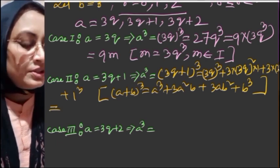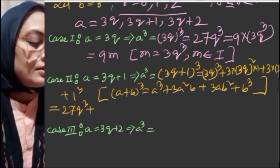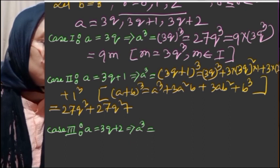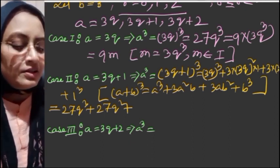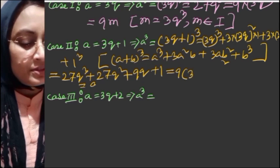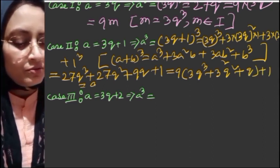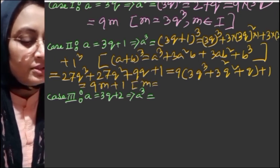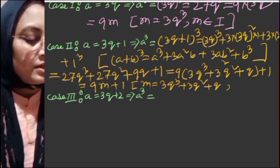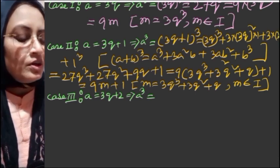This equals 27q³ plus 27q² plus 9q plus 1. Taking 9 common, this is equal to 9(3q³ + 3q² + q) plus 1, which equals 9m+1, where m equals 3q³ + 3q² + q, and m is an integer.